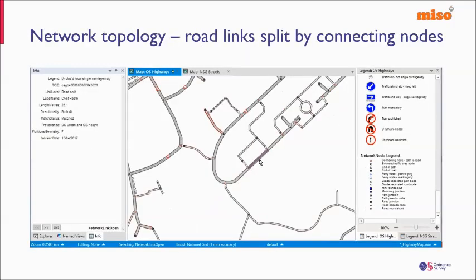There are network topology issues in the data: although paths and roads are included together, they aren't supplied in a structured way that allows a routing algorithm to easily move pedestrian routes between paths and roads. Our subscription service enhances the data by splitting road links every time a path link connects with them. A road link between two connecting path links is divided into sections, cleaning up the topology so a pedestrian routing application — for example, routes to school — can consume the data straight away.